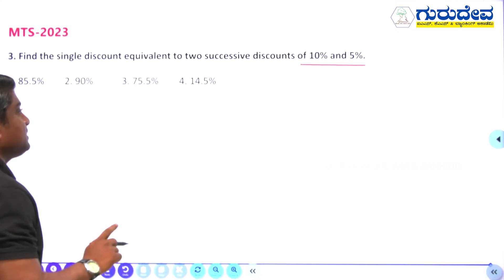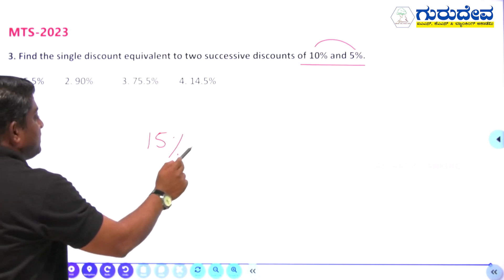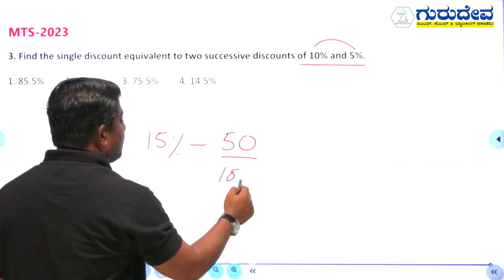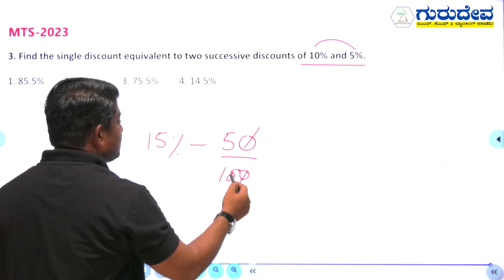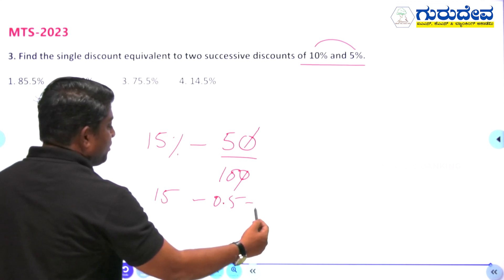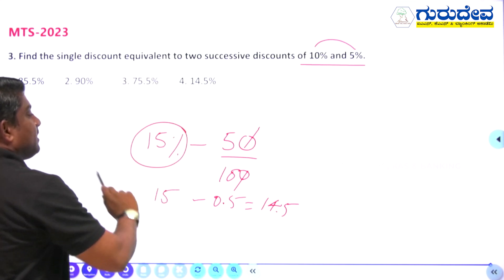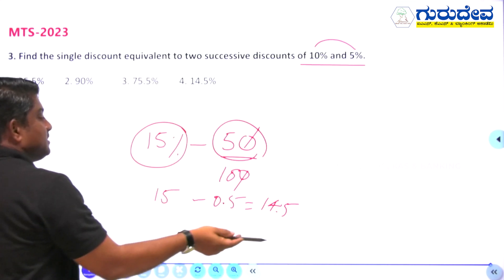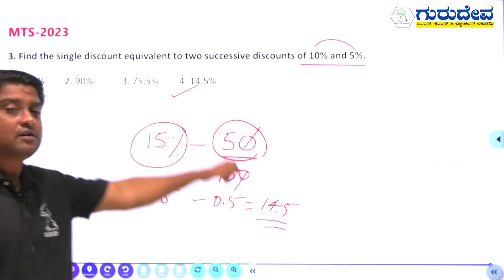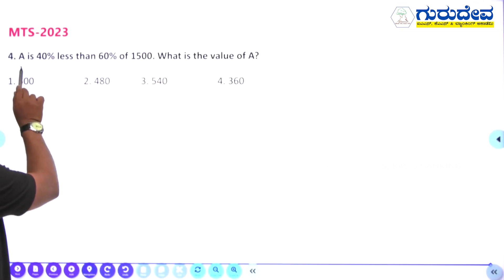Third question: find the single discount equivalent to two successive discounts of 10 percent and 5 percent. First add both: 10 + 5 = 15 percent. Then subtract their product divided by 100: (10 × 5)/100 = 0.5. So the single equivalent discount is 15 − 0.5 = 14.5 percent.